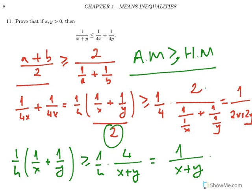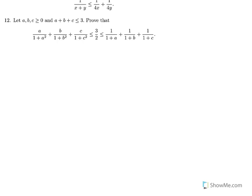Let's continue with Exercise 12. Let A, B, C be greater than or equal to 0 and A plus B plus C less than or equal to 3. Prove that A over (1 plus A²) plus B over (1 plus B²) plus C over (1 plus C²) is less than or equal to 3 over 2, and that is less than or equal to 1 over (1 plus A) plus 1 over (1 plus B) plus 1 over (1 plus C). This inequality has two parts.